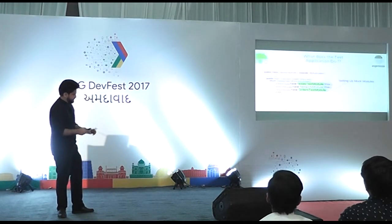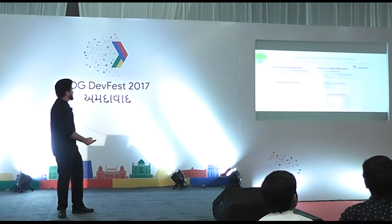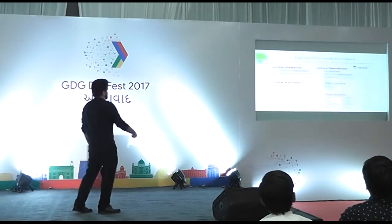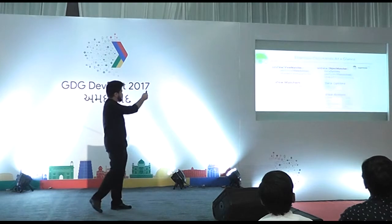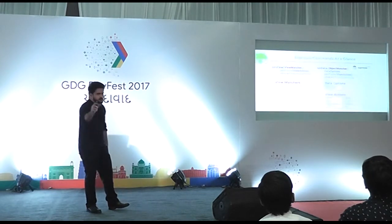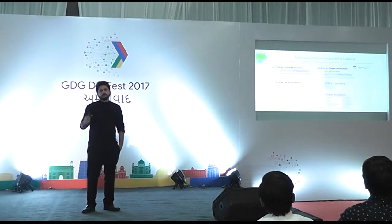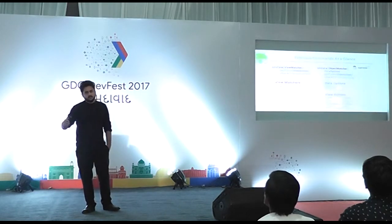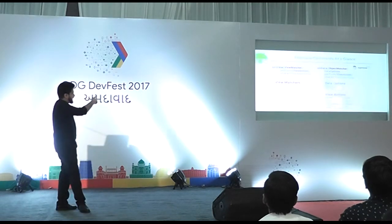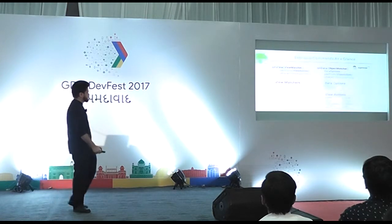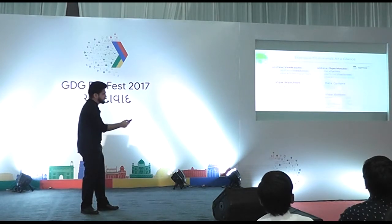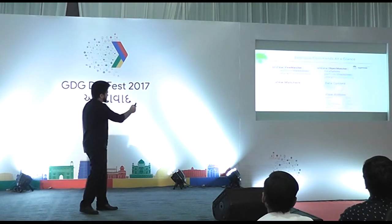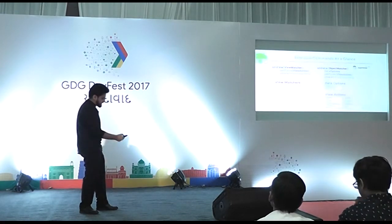Espresso has three main components for writing test cases: ViewMatcher, which finds the view for you — locating a button by ID or text; ViewAction, for performing actions on a view such as clicking it; and ViewAssertion, for asserting that a view is displayed or in the expected state. We'll look into these in detail while going through the test cases.